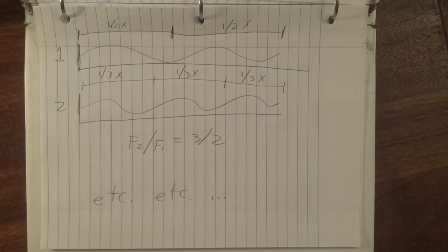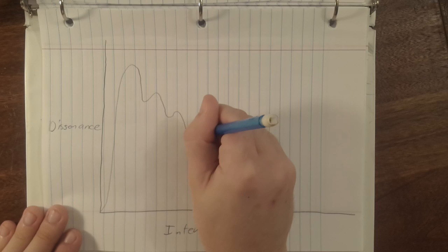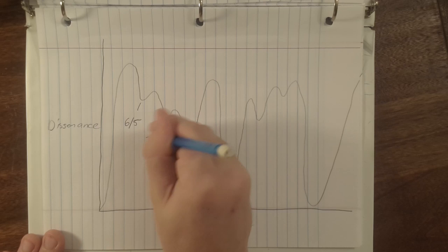Why do we place any importance on small, whole number ratios between frequencies? Because justly intoned intervals have a unique quality of smoothness, blending, or purity, at least when used with many standard musical timbres.